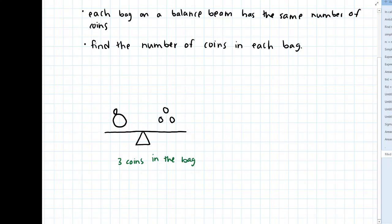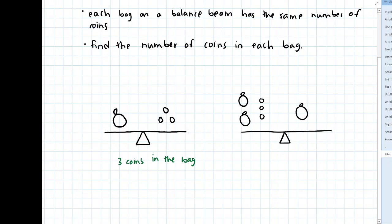What if we look at another example where we've got a balance beam, and here instead of one bag and three coins, we have two bags on one side and three coins, and one bag and six coins on the other side. And the balance on this balance beam — we're assuming we're starting off balanced, so the weight is the same on both sides. So pause the video and think to yourself, how can you determine how many coins are in each bag?